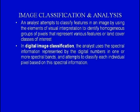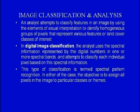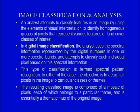In digital image classification, the analyst uses the spectral information represented by the digital number in one or more spectral bands and attempts to classify each individual pixel based on this spectral information. This type of classification is termed spectral recognition. In either case — visual or digital — the object is to assign all pixels in the image to particular classes or themes. The resulting classified image is a mosaic of pixels, each belonging to a particular theme, essentially a thematic map of the original image.